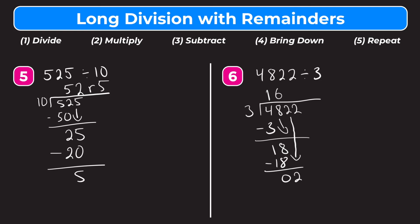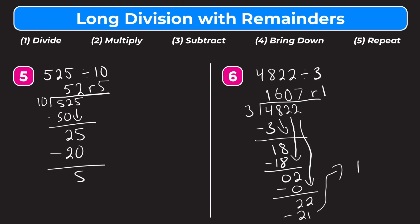Step 5 is repeat — we divide again. How many whole groups of 3 go into 2? That's going to be 0, because 2 is smaller than 3. 0 times 3 is 0. Step 3 is subtract: 2 minus 0 is 2. Step 4 is bring down — bring down the other 2, making 22. Step 5 is repeat: how many whole groups of 3 go into 22? That's going to be 7. 7 times 3 is 21. Step 3 is subtract: 22 minus 21 is 1. Step 4 would be bring down, but we've gone all the way to the right in our dividend, so whatever we're left with becomes our remainder — we write R1. So 4,822 divided by 3 is 1,607 remainder 1.